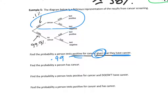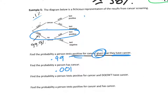Find the probability a person tests positive for cancer and does not have cancer — a scary false positive. Using 'and' means we multiply: 0.999 × 0.05, which equals about 0.0499, or about 5%.